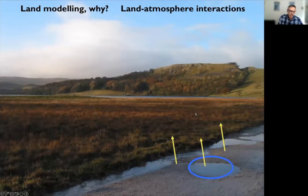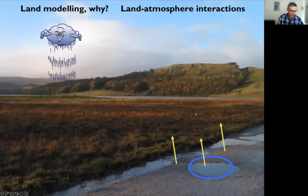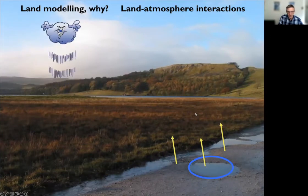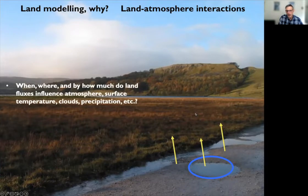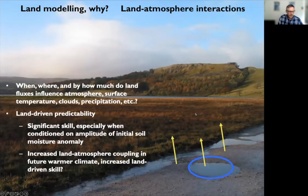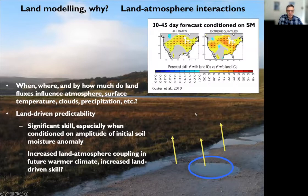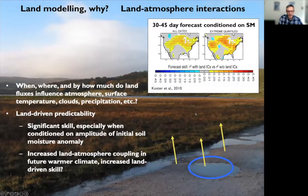Land-atmosphere interactions have been a principal question for many years. If you have mostly wet soils after a rain event, do those changes in surface fluxes lead to changes in precipitation? More broadly: when, where, and by how much do land fluxes influence surface temperature, clouds, and precipitation? There's also evidence of land-driven predictability in the weather and seasonal prediction world, with significant skill especially when conditioned on the amplitude of the initial soil moisture anomaly.